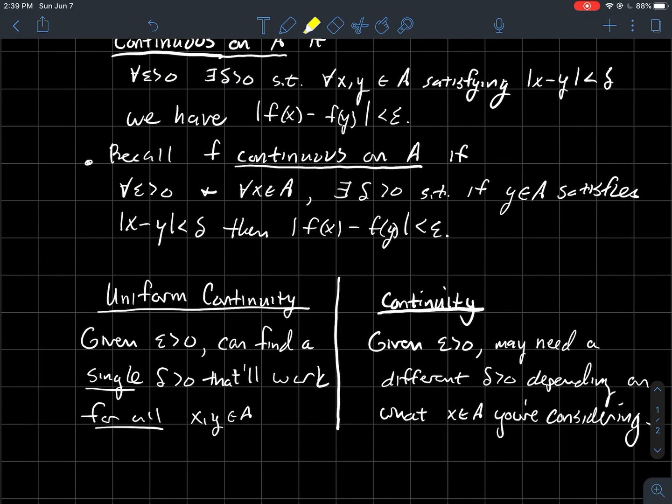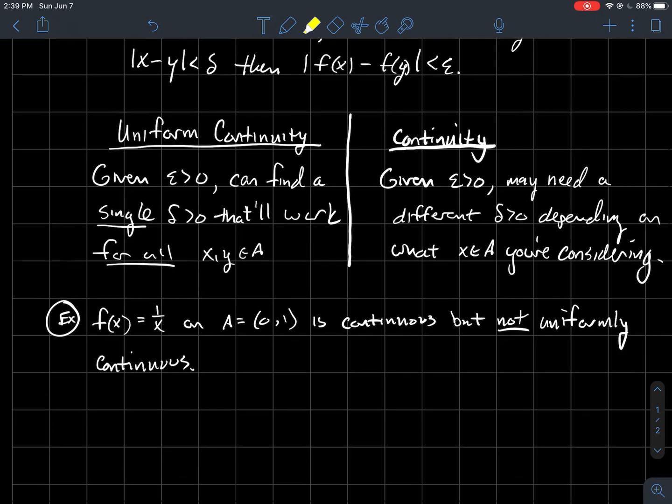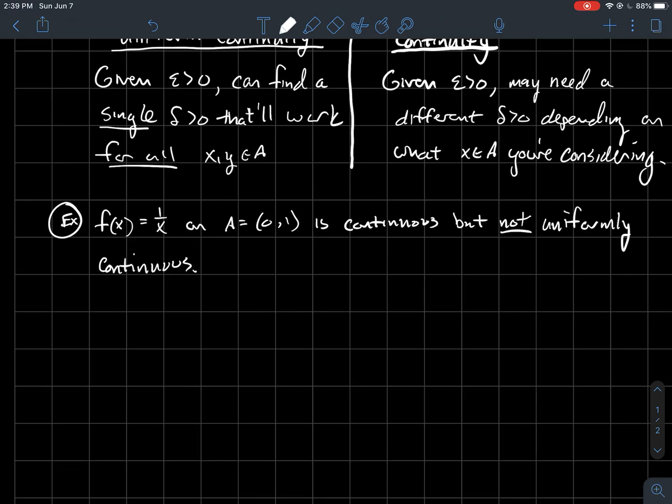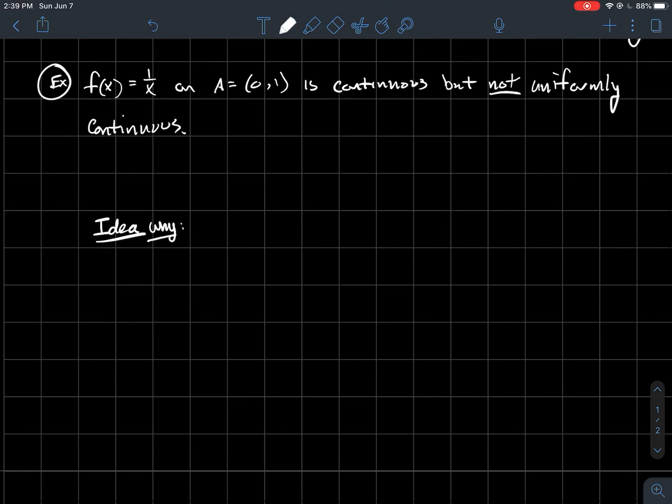So let's do some examples and a picture too. So we've looked at this example before, I think, and I think what I mean to say is, 1 over x on the interval from say 0 to 1, it's continuous, but it's not uniformly continuous. And what I want to do is just give you a picture about why.